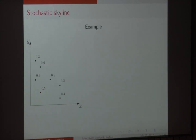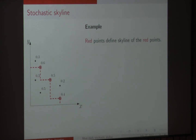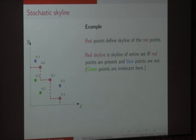Let me give you an example. We have a set of points with existence probabilities indicated by real numbers. Let's consider just the three red points. With respect to the red set, these three red points form a skyline. The question is: under what circumstances would these red points form a skyline of the entire set? Clearly, the red points must be present, and the two blue points that are not dominated by any of the red points should not be present. Notice that the green points are irrelevant — whether they are present or not doesn't affect the skyline status of the red points.